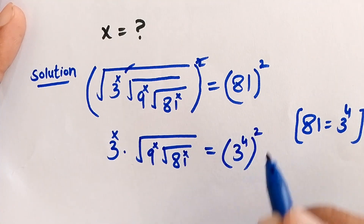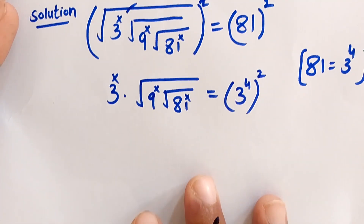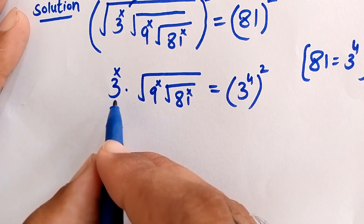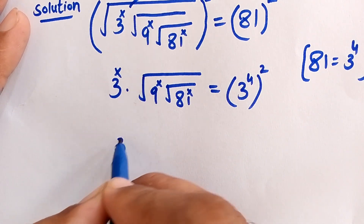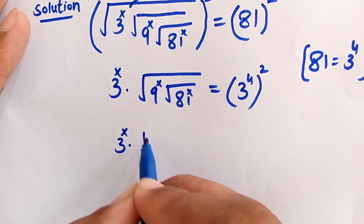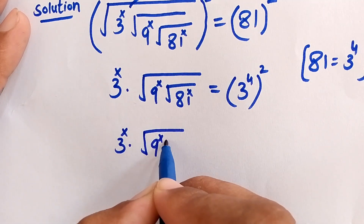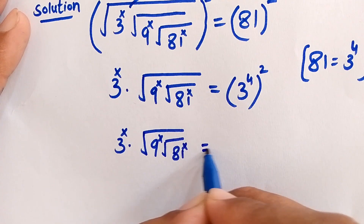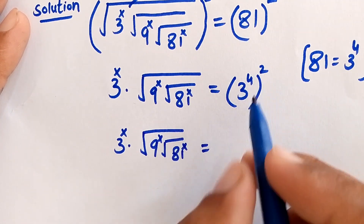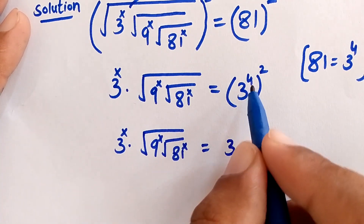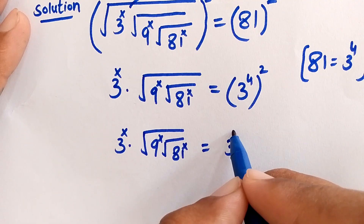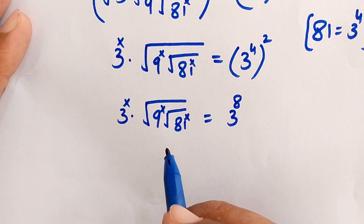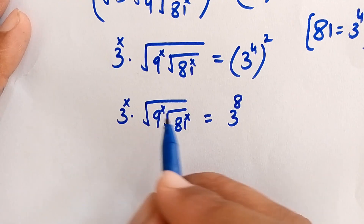In the next step: 3^x · 9^x · √(81^x) = 3^4 · 2 = 3^8. So the right-hand side is now 3^8.